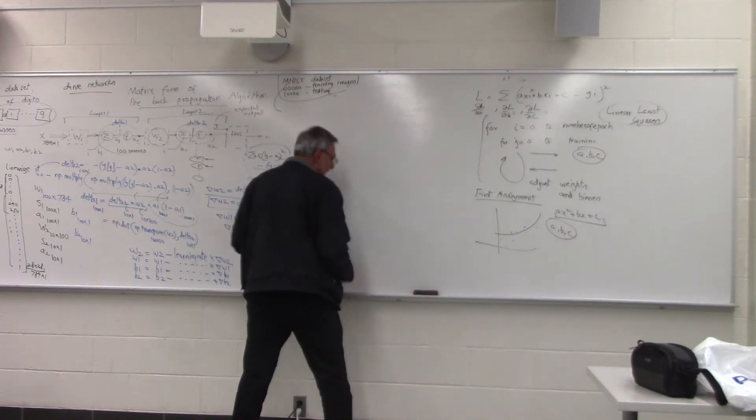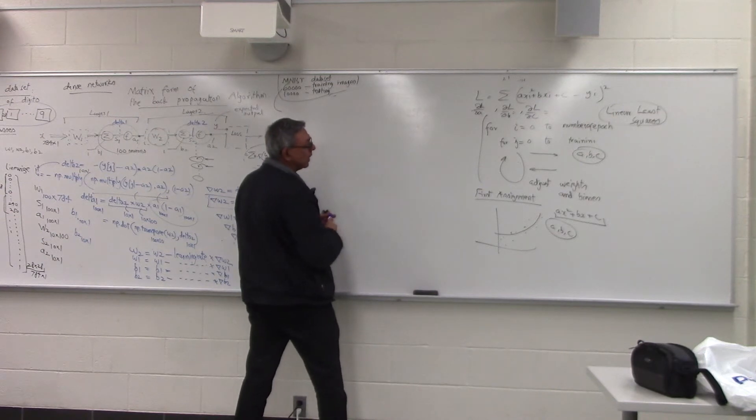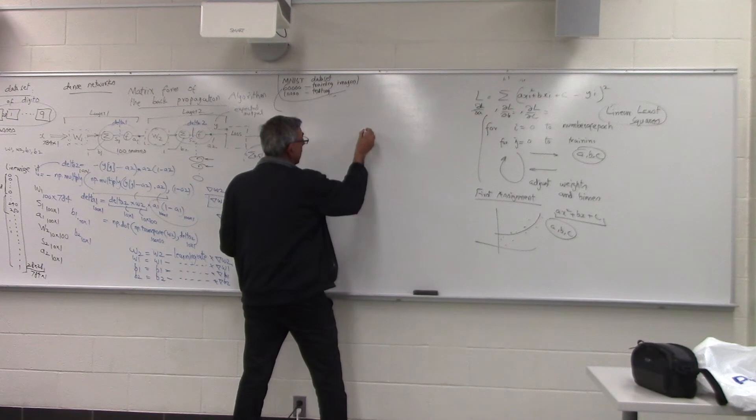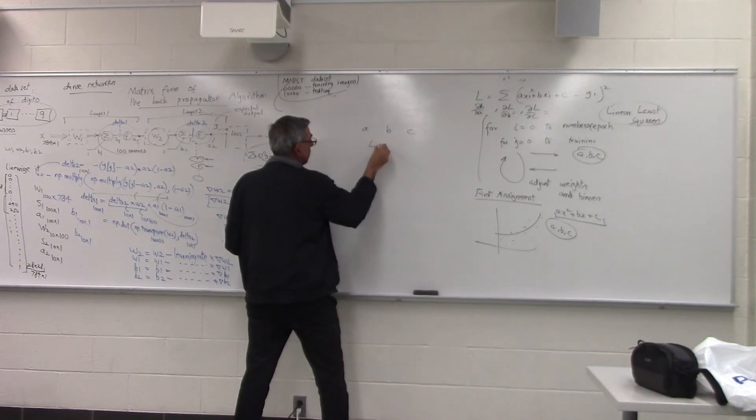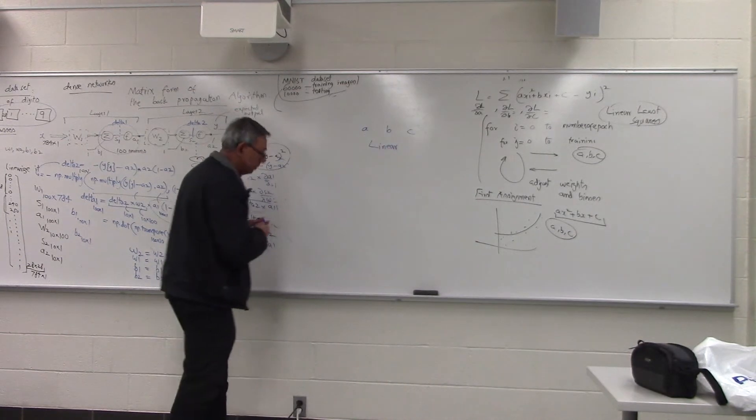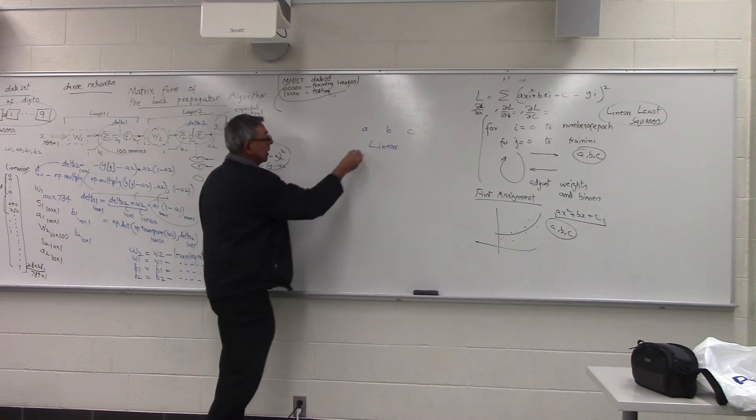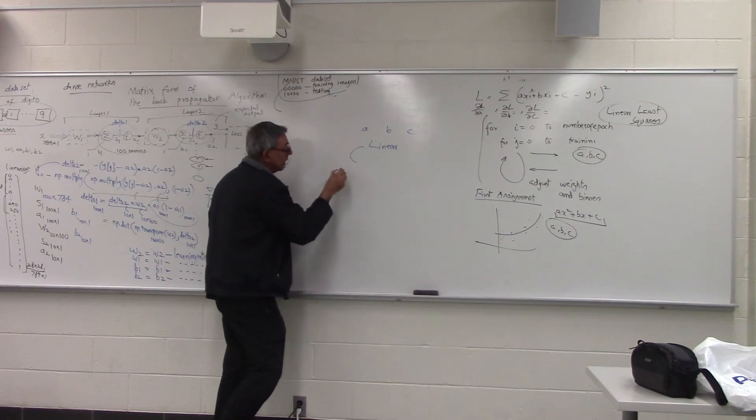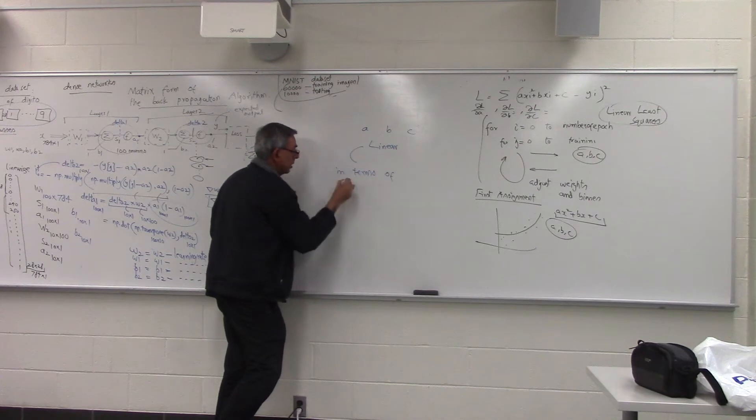Okay, so here's the answer. When we did linear least squares, our parameters were A, B, and C. And what does linear mean? In fact, let me bring it out. If you recall in the PowerPoint, it was mentioned that linear means linear in terms of parameters.